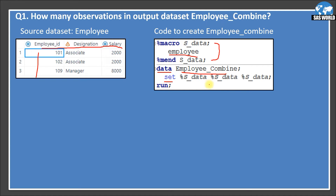Not using any semicolons with this. What will happen if I run this code? In a data step and in a macro, the macro part always runs first, and then the data step runs. So when you run this data step, what will happen?